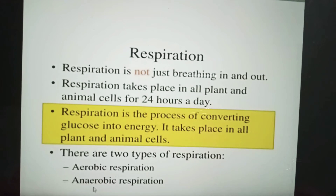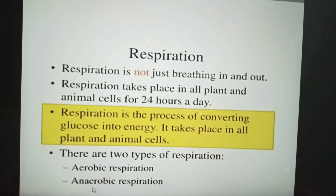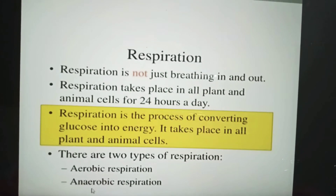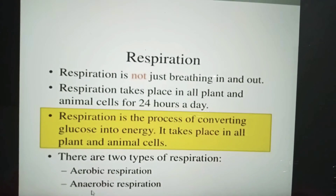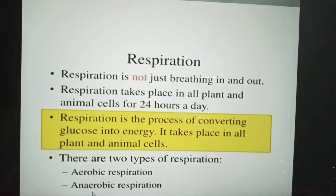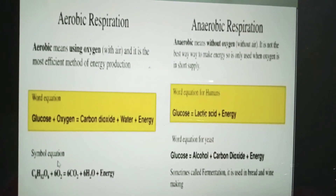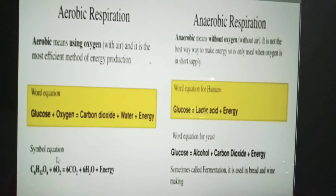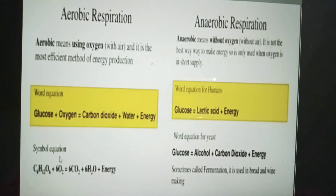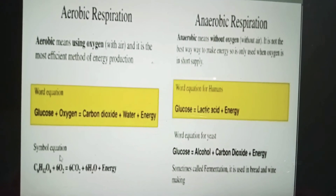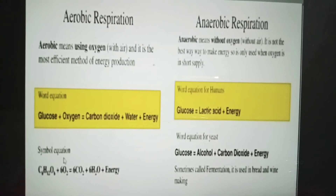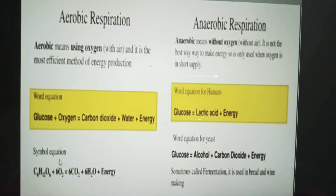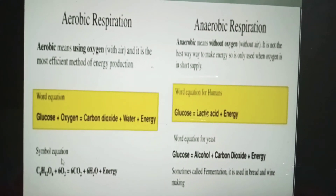Respiration is the process of converting glucose into energy. It takes place in plants and animal cells. There are two types of respiration: aerobic respiration and anaerobic respiration. Aerobic respiration means using oxygen, and it is the most efficient method of energy production. The word equation for aerobic respiration is: glucose plus oxygen gives carbon dioxide, water, and energy.